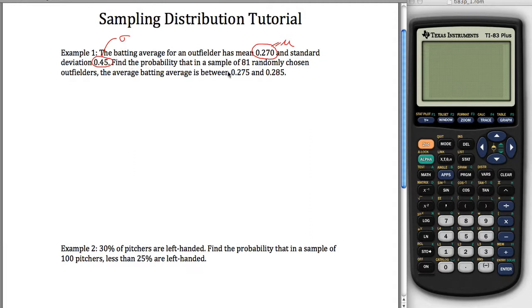And then what it's saying is find the probability that in a sample of 81, that'll be key, this number here, the sample size we use n to represent. In a sample of 81 randomly chosen outfielders, what's the probability that the average batting average is between 0.275 and 0.285? So the idea here, I mean the key point, the thing that you want to notice, is we're no longer asking what's the probability that one person, one outfielder, has a batting average between 0.275 and 0.285.